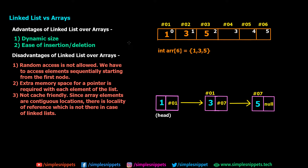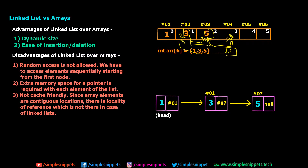Now let's look at ease of insertion and deletion. Say our array stores 1, 3, 5 in ascending order — these are employee IDs. A new ID of value 2 comes in. According to our requirement that all values be in ascending order, 2 should go here, 3 should shift over, and 5 should shift over. Just to add one value, we performed multiple operations — we moved 5, moved 3, then added 2. We had to rearrange the entire array just to insert one value. Imagine doing this with hundreds of values.